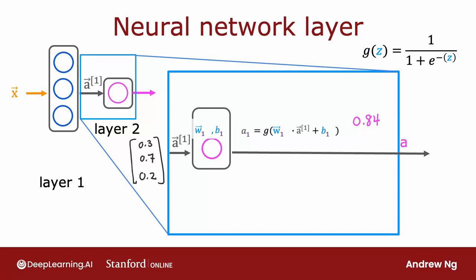dot product with a superscript square bracket one — the input into this layer — plus b1. This gives the familiar z quantity, and g as before is the sigmoid function applied to it. If this results in a number like 0.84, then that becomes the output of the output layer. Because the output layer has just a single neuron, this output is a scalar — a single number rather than a vector.